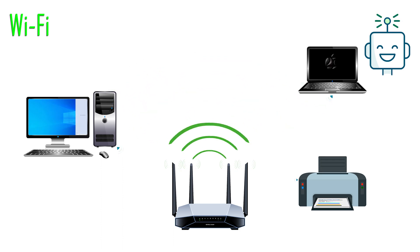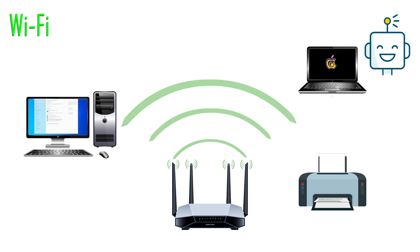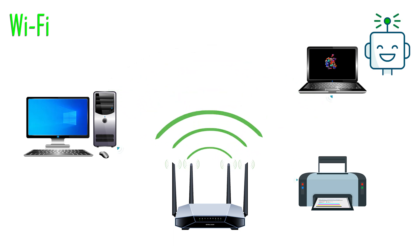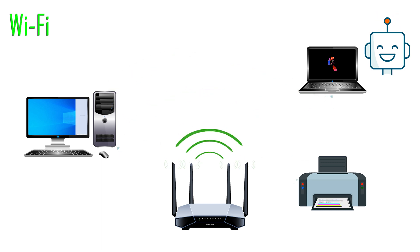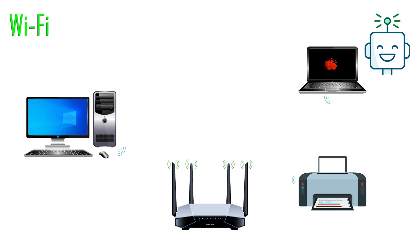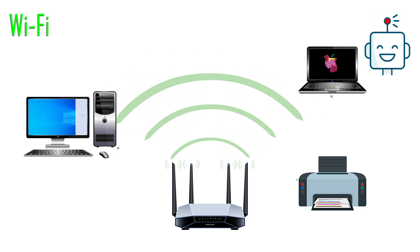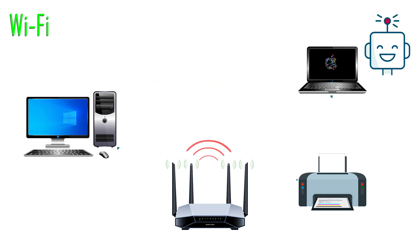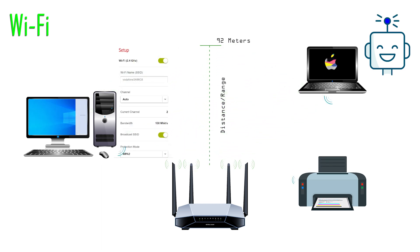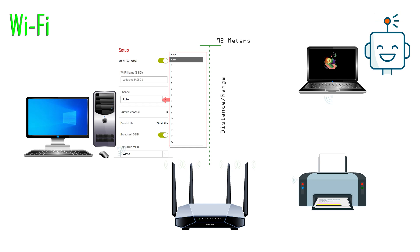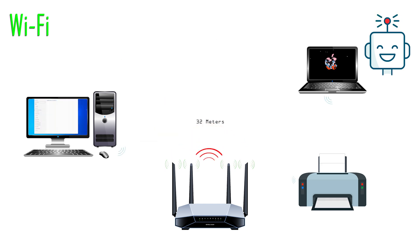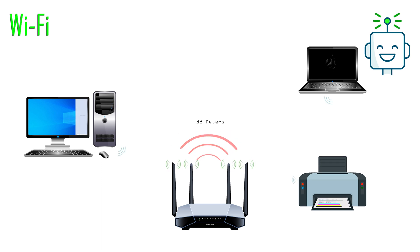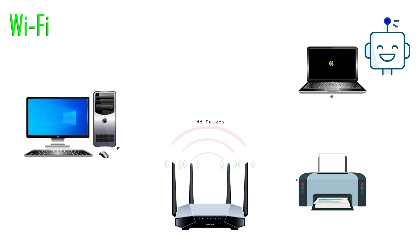The Wi-Fi router transmits at a frequency of 2.4 GHz and 5 GHz, across one of several channels per frequency. The 2.4 GHz band, meant for longer distances, may have 14 channels, whereas the 5 GHz band may have 44 channels but works for shorter distances.